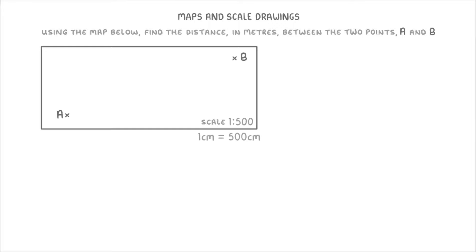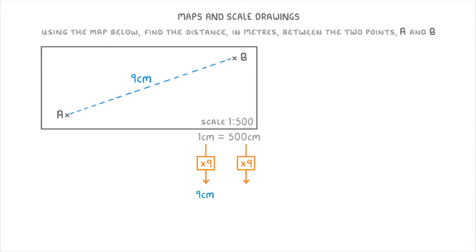The next thing we're going to have to do is find the distance between A and B on our diagram, which we can do by measuring it with a ruler. On my screen, that's 9 centimetres. Then because we know from our scale that each 1 centimetre on our diagram represents 500 centimetres in real life, we can work out what that 9 centimetres must represent. Because 9 centimetres is 9 times bigger than 1 centimetre, we also have to multiply the 500 centimetres by 9, to get 4,500 centimetres. Then all we need to do is convert that into metres by dividing by 100, to get 45 metres. So the points A and B are 45 metres apart in real life.